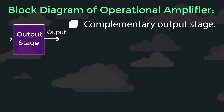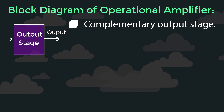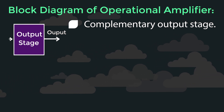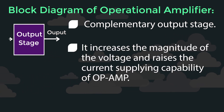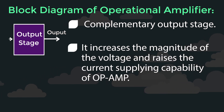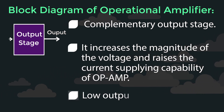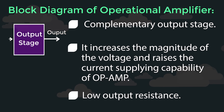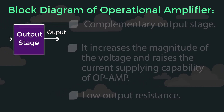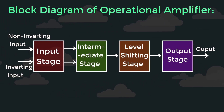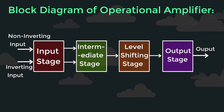Output Stage: This stage is normally a complementary output stage. It increases the magnitude of the voltage and raises the current supplying capability of the Op Amp. It also provides a low output resistance.